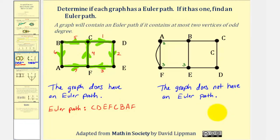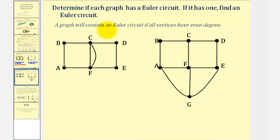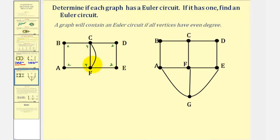Now let's revisit Euler circuits. A graph will contain an Euler circuit if all vertices have even degree. We want to determine if each graph has an Euler circuit, and if so, find one. We'll begin by determining the degree of each vertex: degree two, degree two, degree four, degree four, degree two, and degree two. All vertices have even degree, therefore this graph does have an Euler circuit.